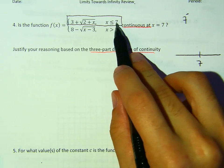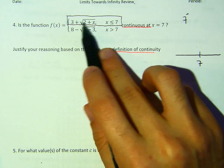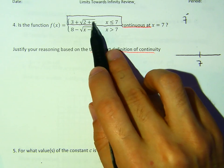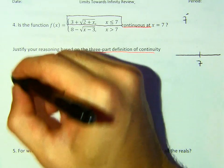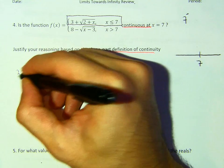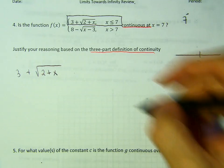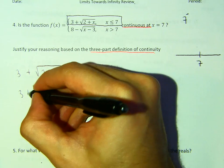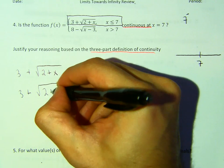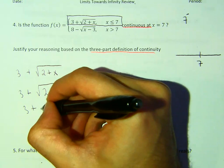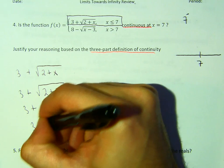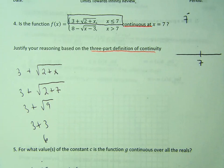So here what we need to do is we need to plug 7 into this and let's see if we get close. So here, it's 3 plus square root 2 plus X, right? Let's see. So this becomes 3 plus square root 2 plus 7. So that's 3 plus square root 9, which is 3 plus 3, which is equal to 6.